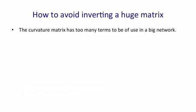The curvature matrix determines the size of those interactions. So we have to deal with the curvature. We can't just ignore it. And we'd like to deal with it without actually inverting a huge matrix because the matrix has too many terms in a big neural net.